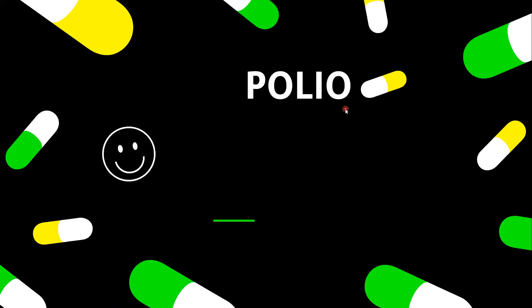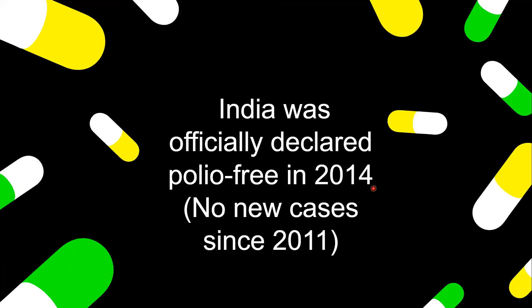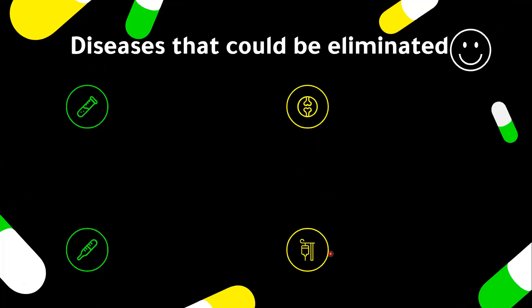Polio deserves special mention: as of 2019, polio is endemic only in three countries — Afghanistan, Nigeria, and Pakistan — so we are very close to completely eradicating the poliovirus. For India specifically, we were successful in the elimination and eradication of polio and were declared polio-free in 2014, after no new cases had emerged since 2011.